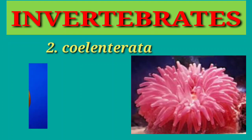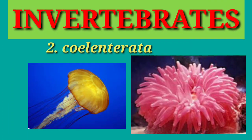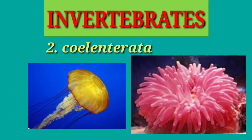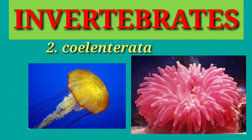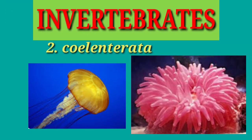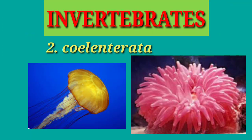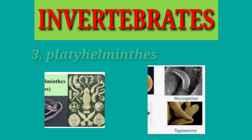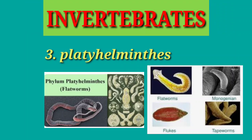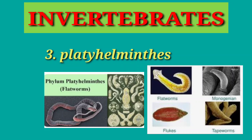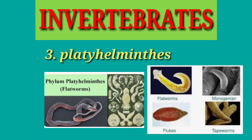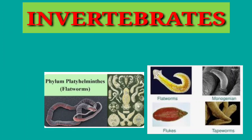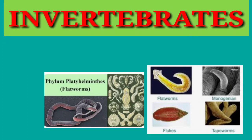Coelenterates have soft bodies that enable them to float. Most coelenterates live near the surface of the water. Number three is the platyhelminthes. This group is composed of flat worms with flat bodies. Some, like the tapeworms, have segmented bodies.